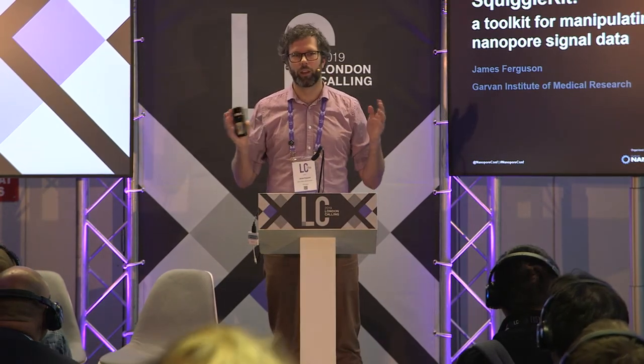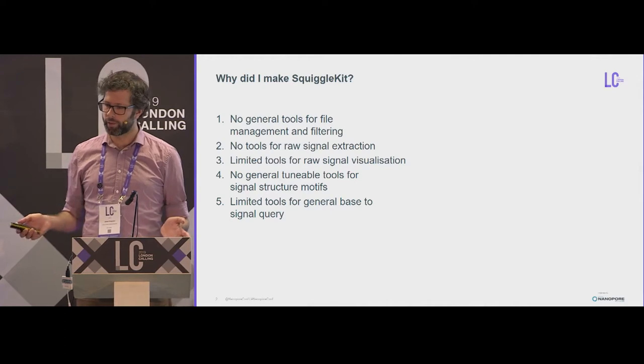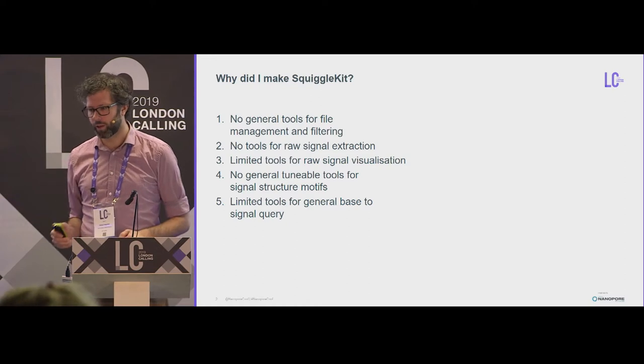Okay, so SquiggleKit was made out of a bunch of tools that I was making while doing many other types of research. For example, single cell, trying to develop read until algorithms, looking for poly A tails, or trying to develop deep learning data sets so you can create your data sets to do your testing and validation and all that jazz. And at the time when I was trying to do this, there was this list of things that weren't quite there. There were tools that were similar, and I'll go into that in a second.